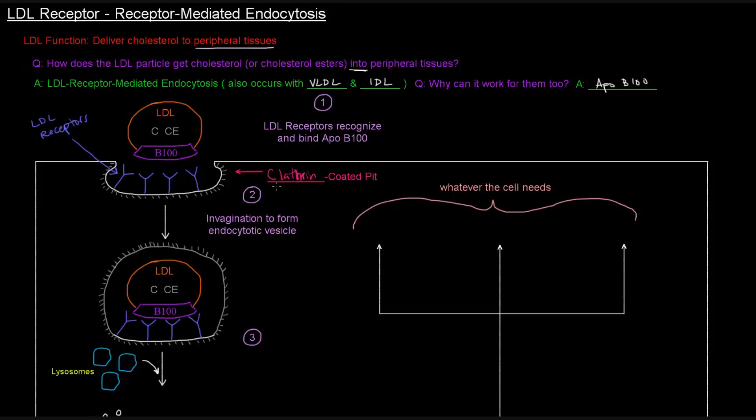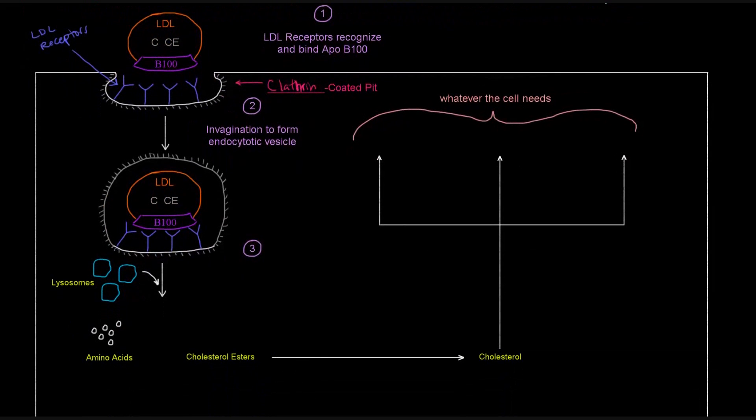The invagination forms the endocytotic vesicle. So we have the LDL taken up into this vesicle here. What follows is lysosomes will begin to fuse with the vesicle and basically hydrolyze it, breaking it up into all of its components, including amino acids, cholesterol esters, and other components of the LDL.